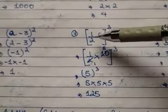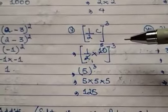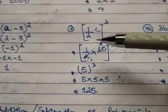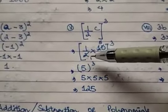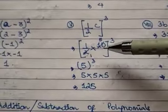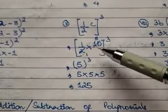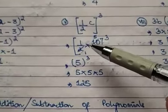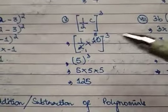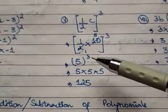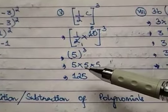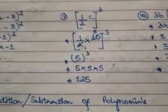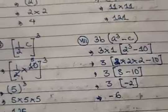The fifth expression is (1/2 × c) whole cubed. Substituting c = 10: (1/2) × 10 — we cancel: 2 goes into 10 five times, leaving 5. So we have 5 cubed = 5 × 5 × 5 = 125.